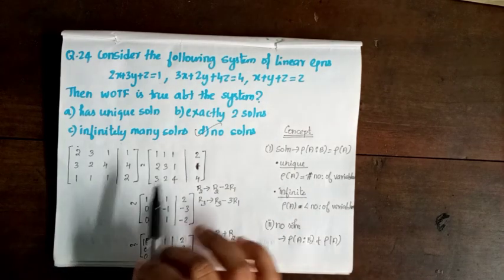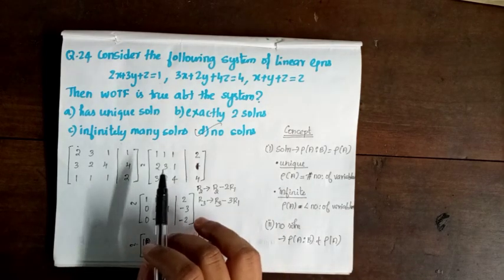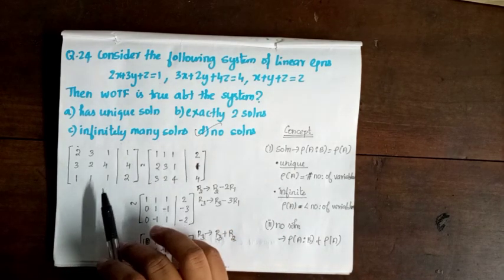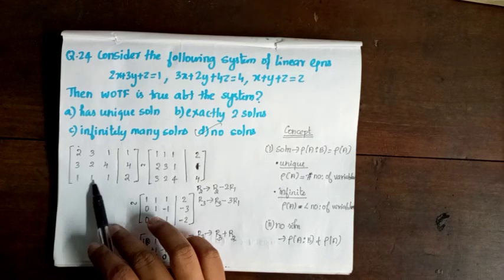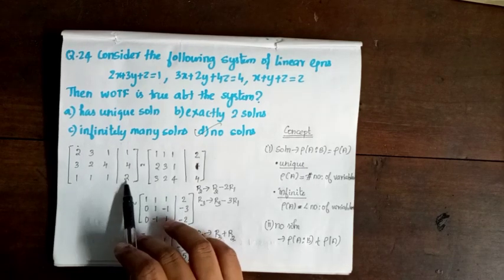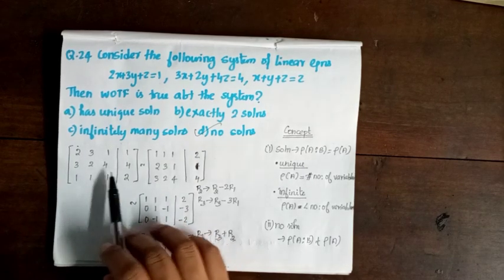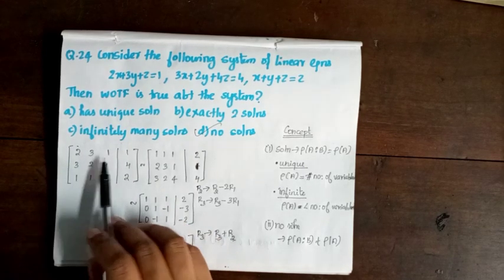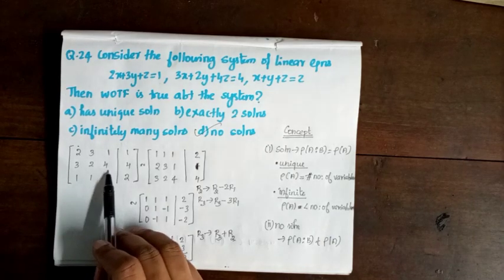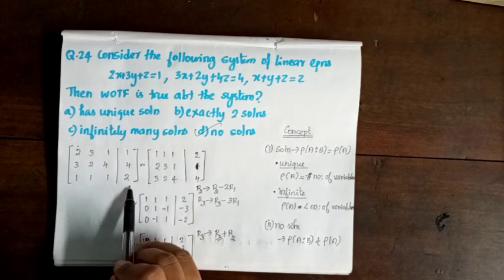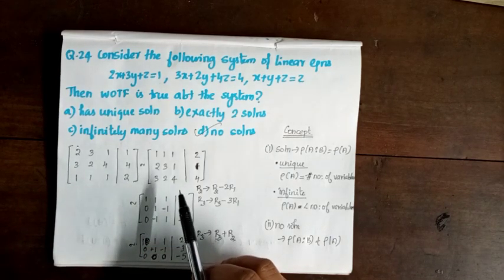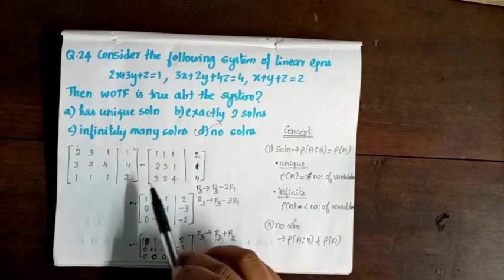We write the augmented matrix with coefficient and constant columns, then apply row reduction operations to determine the rank of A and rank of [A|B].